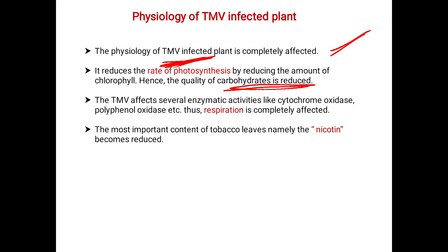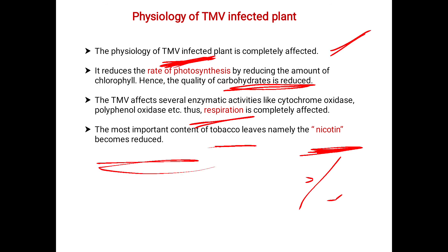TMV affects enzymatic activities like cytochrome oxidase, polyphenol oxidase, etc., so respiration is completely affected. Also, the most important content of tobacco leaves is nicotine — this is why tobacco is cultivated. When infected, the percentage of nicotine present is reduced in the infected plant compared to the normal plant, which affects it economically. The quality of the plant is ultimately reduced.